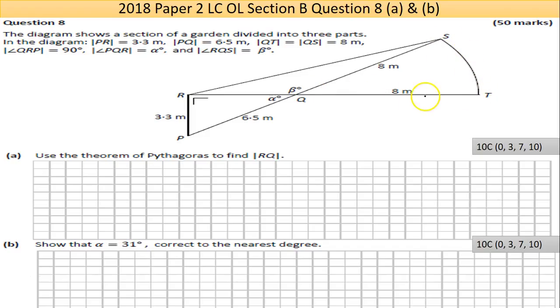Angle QRP is 90 degrees, the 90 degree angle there. PQR is called alpha and then the angle RQS is called beta.